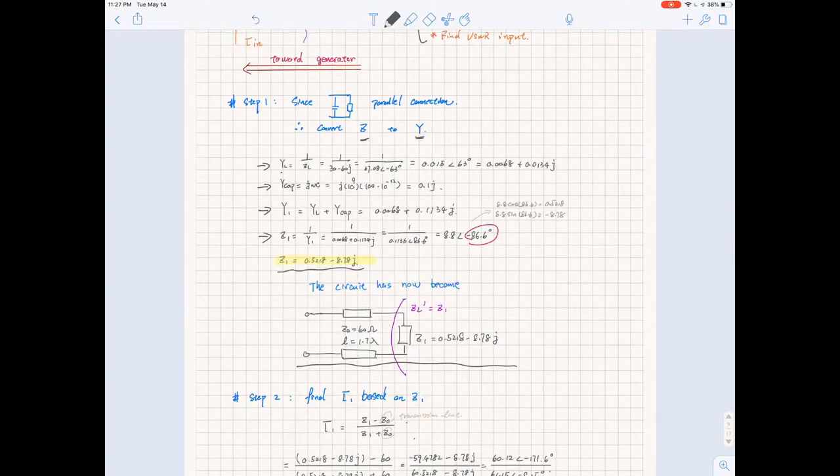This is what the circuit has become. I would call Z1 the C1 that we just got from here, and I would call it as ZL' because it's essentially our equivalent load impedance.